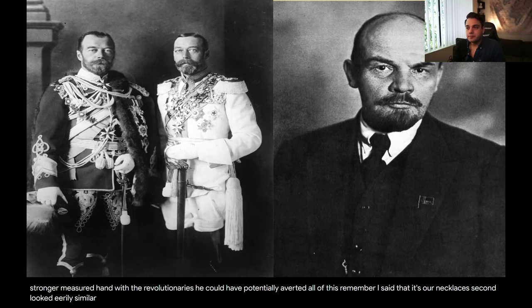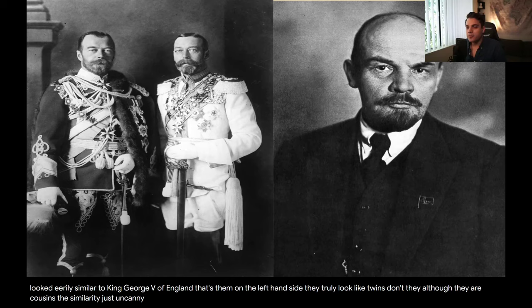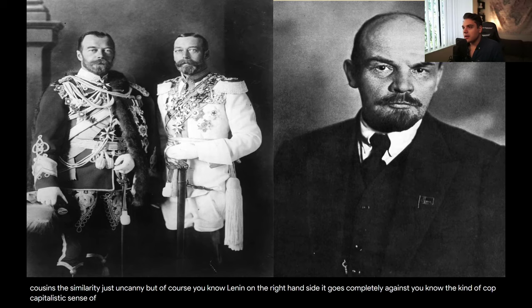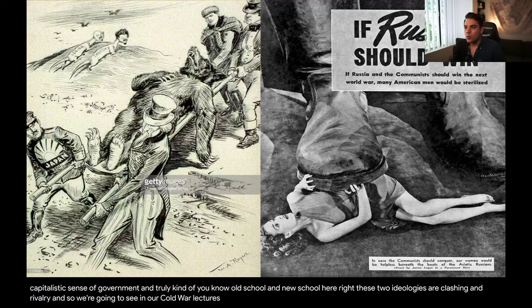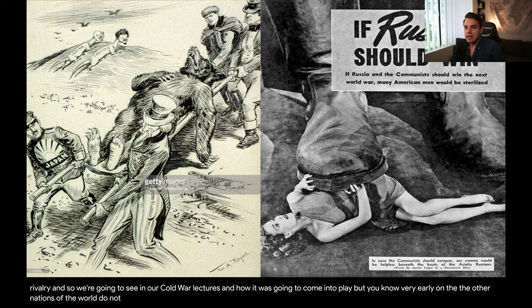Tsar Nicholas II looked eerily similar to King George V of England — they truly look like twins, although they are cousins. The similarity is just uncanny. But of course, Lenin on the right-hand side goes completely against the capitalistic sense of government — truly old school versus new school. These two ideologies are clashing and rivaling. We're going to see in our Cold War lectures what that meant and how it was going to come into play. Very early on, the other nations of the world do not look favorably onto this communistic and Marxist revolution.